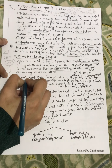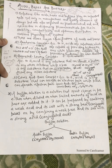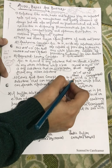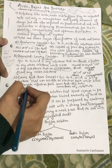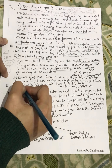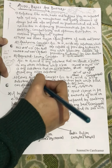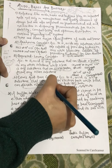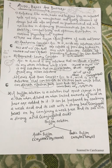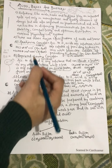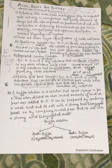Next is the Lewis acid-base concept, which is electron-based. According to it, an acid is any substance that can accept an electron pair, while a base can donate an electron pair. These are the differences between acids and bases as per the three concepts: Arrhenius, Bronsted-Lowry, and Lewis acid-base concept.